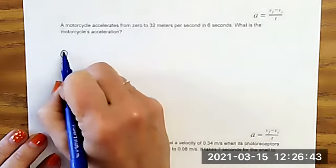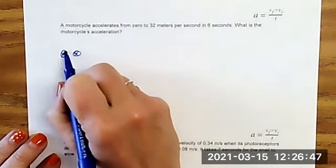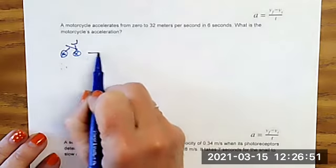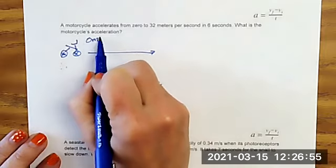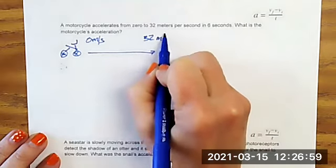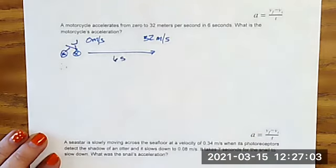So we're going to draw a really simple motorcycle if we can. I think that is it. It doesn't say there's anyone driving this motorcycle, so we're not going to draw a person. It starts off at zero meters per second and it finishes at 32 meters per second and it accomplishes this in six seconds.